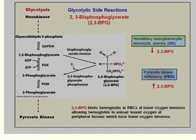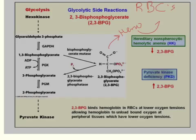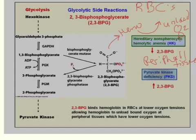This 2,3-bisphosphoglycerate is especially needed in red blood cells. What happens is 2,3-BPG will bind to hemoglobin and allows hemoglobin to unload oxygen — especially when O2 levels are low — in peripheral tissue. So it unloads oxygen in the peripheral tissue.